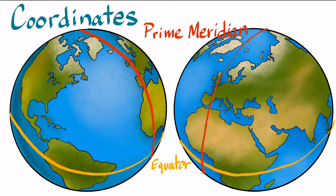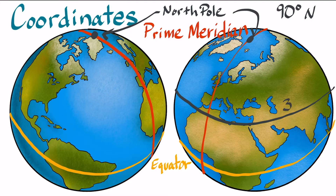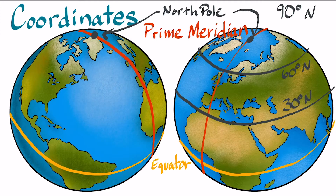Going halfway around the Earth would be 180 degrees. Going half of that would be 90 degrees. You can continue to do this on and on. So this would be 30 degrees north of the equator, and this would be 60 degrees north. And the top would be 90 degrees because we went one fourth of the way around.